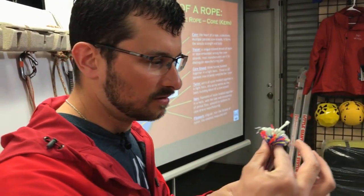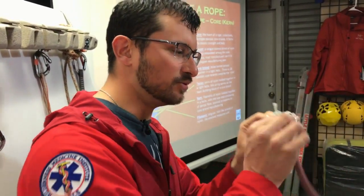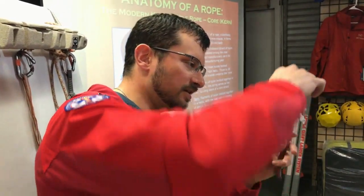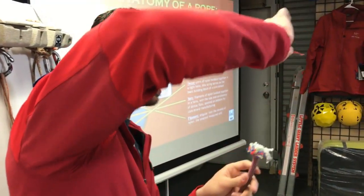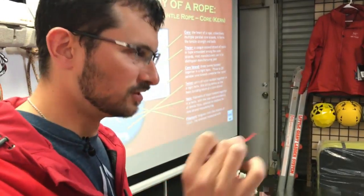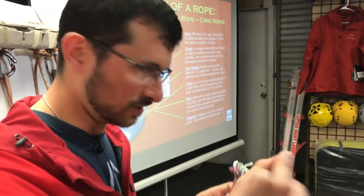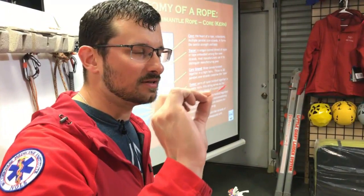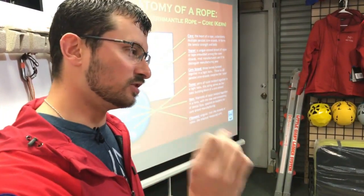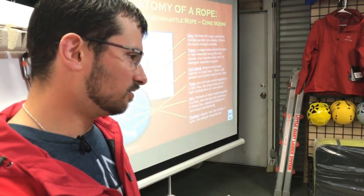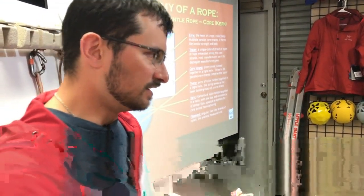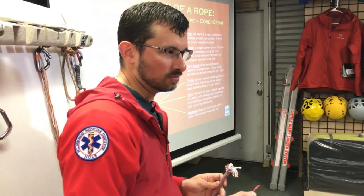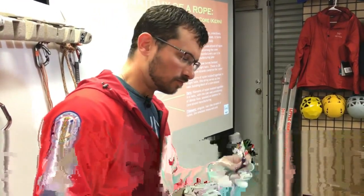Usually in the core they keep a tracer — you can see this little red piece here. Manufacturers will choose a different color every year as a way of identifying the manufacturer and year of the rope. This one happens to be red.